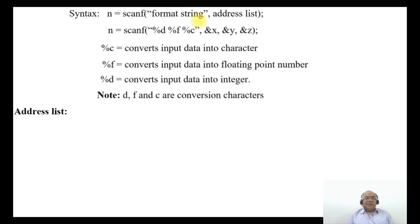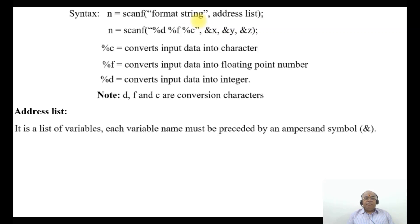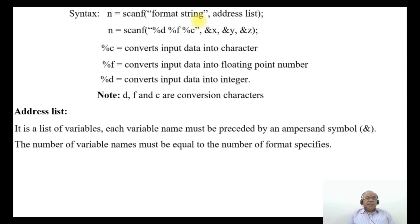For the address list, each variable name must be preceded by an ampersand symbol (&). The number of variable names must be equal to the number of format specifiers. So if you have three variables — x, y, z — you should have three format specifiers: %d, %f, and %c.